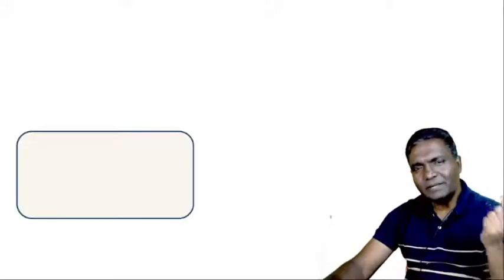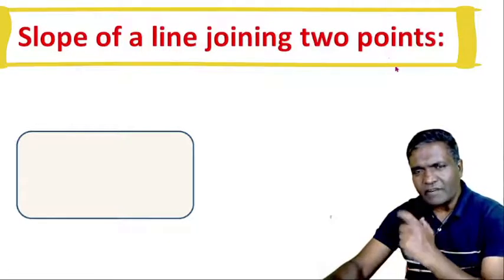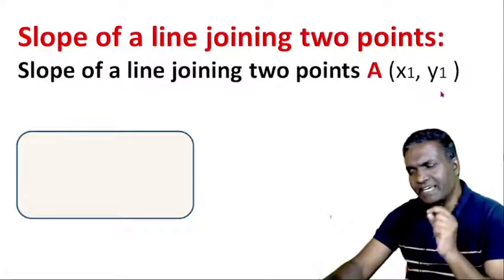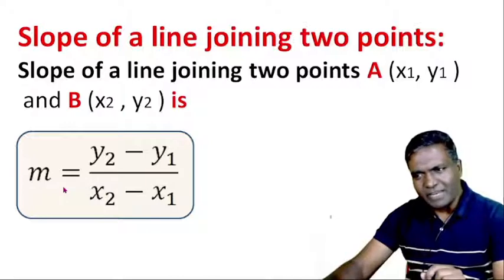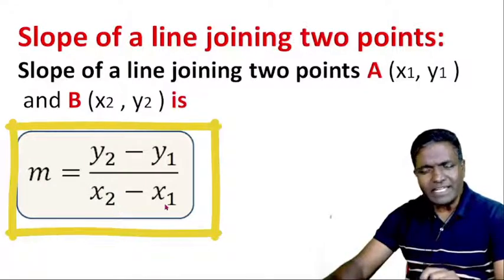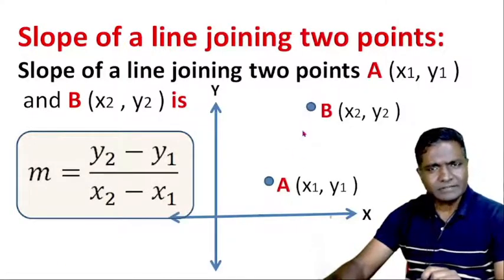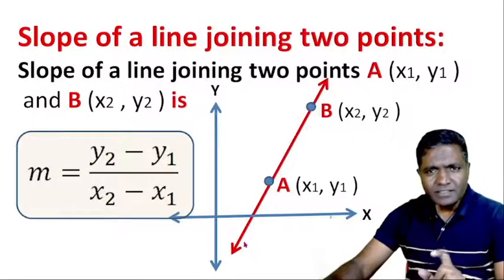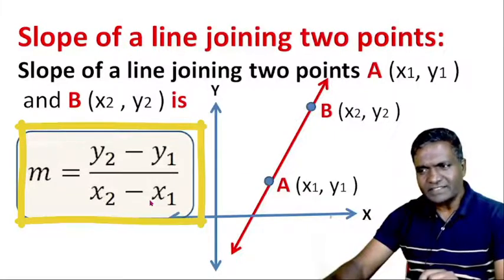Now suppose we are given any two points on the line. We will discuss the slope of a line joining two points. The slope of a line joining two points A(x1, y1) and B(x2, y2) is given by the expression: m = (y2 - y1) / (x2 - x1). Using this formula, we can find the slope of the line.